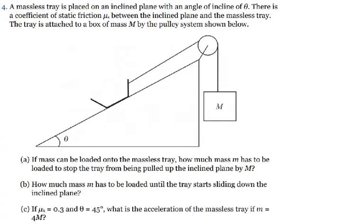In this question from a study guide for AP Physics 1, we have a massless tray placed on an inclined plane with an angle of incline theta. There is a coefficient of static friction mu-s between the inclined plane and the massless tray. The tray is attached to a box of mass M and a pulley system. How much mass m has to be loaded onto the tray to stop it from being pulled along the incline plane by mass M?